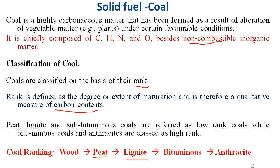Next is lignite — a soft, brown colored solid with an adequate amount of water. The percentage of carbon here is almost about 70%, and its calorific value is 6500 to 7000 kcal per kg. Next is bituminous coal, a dark brown solid with a calorific value of about 7000 kcal per kg and about 80 to 83% carbon content. Finally, the highest rank coal is anthracite, with 92 to 98% carbon and the highest calorific value of 8600 to 8700 kcal per kg.